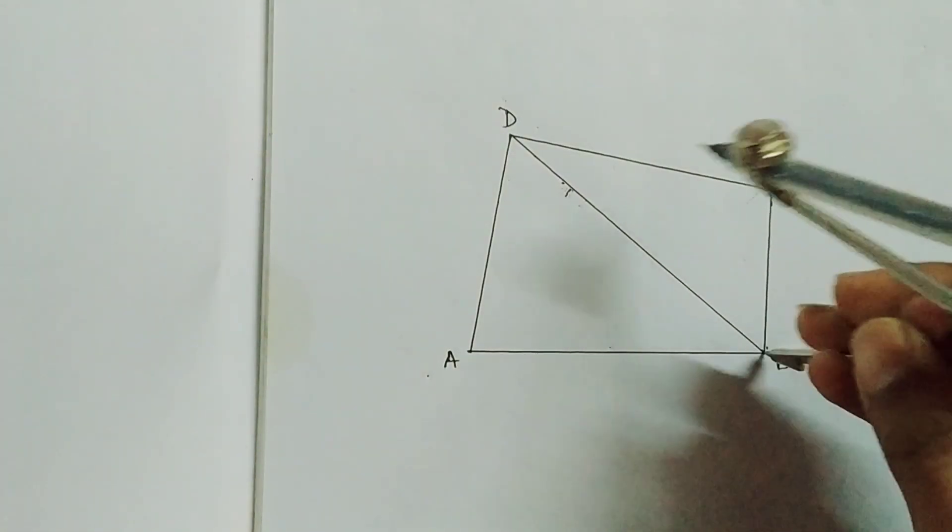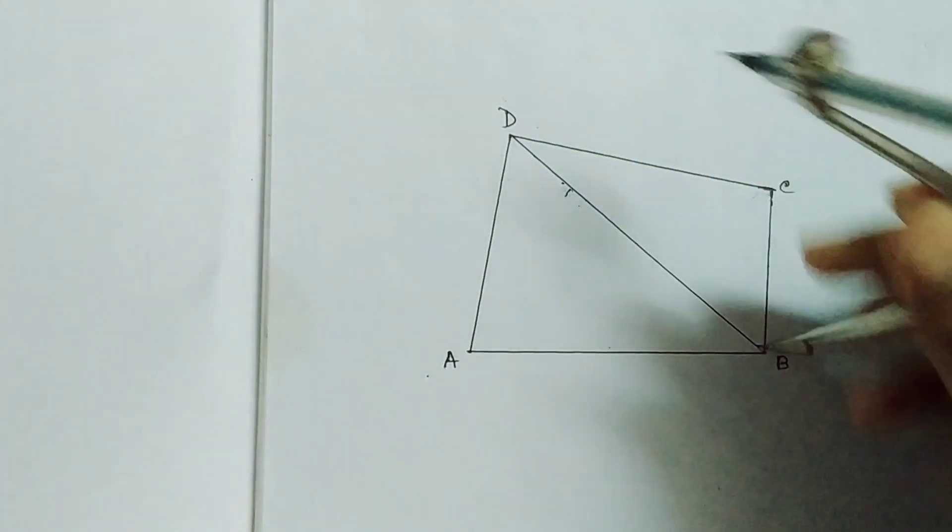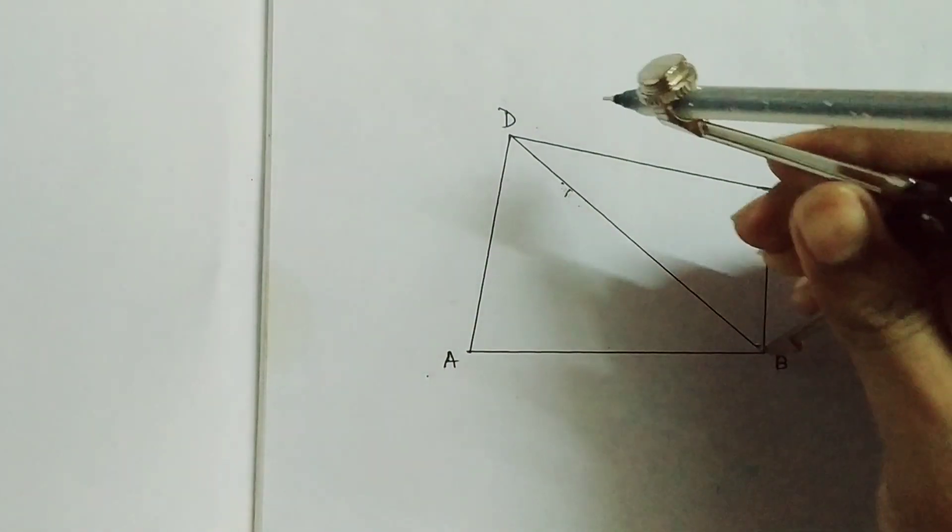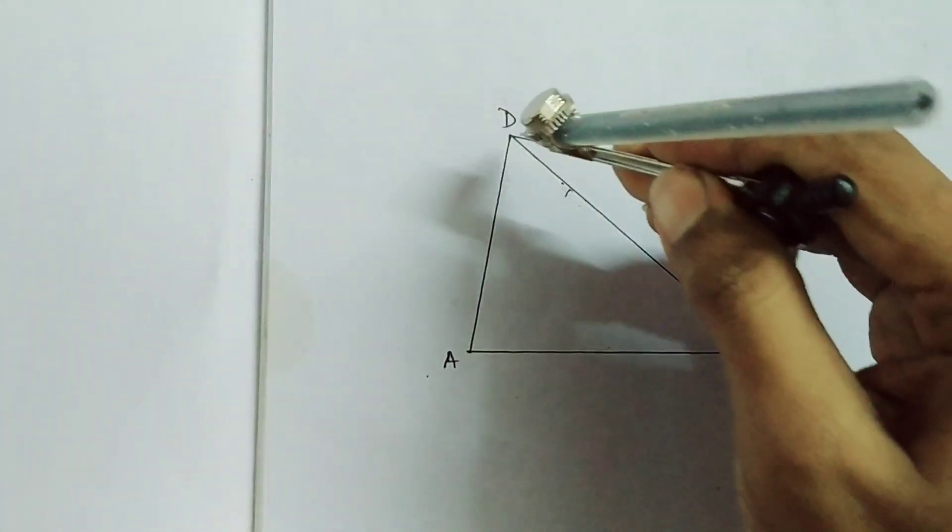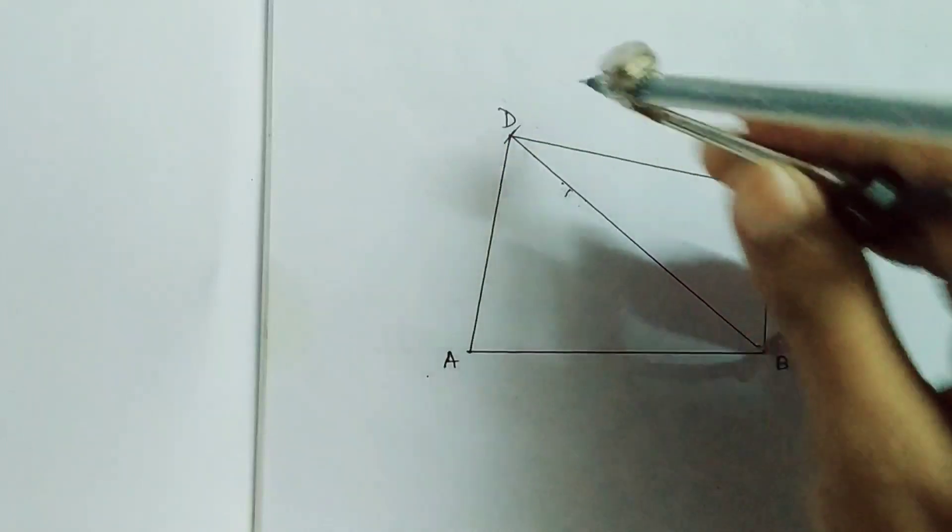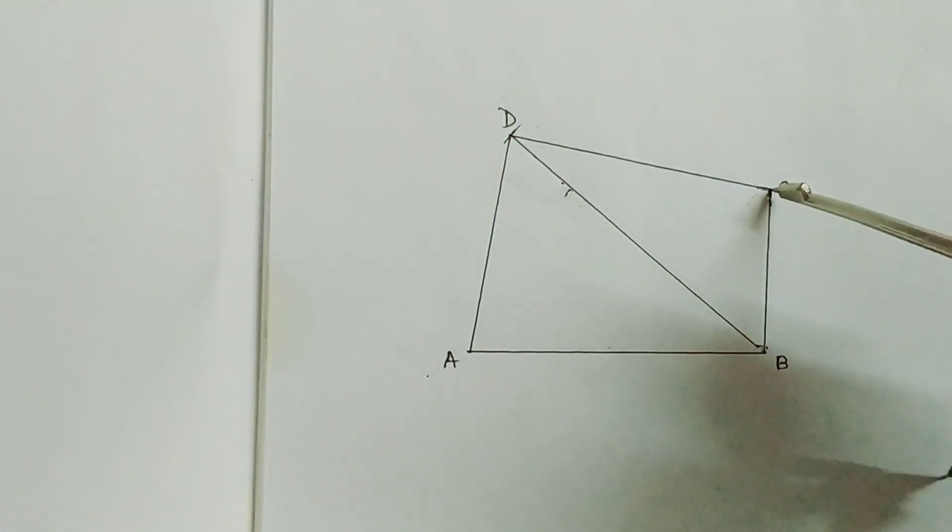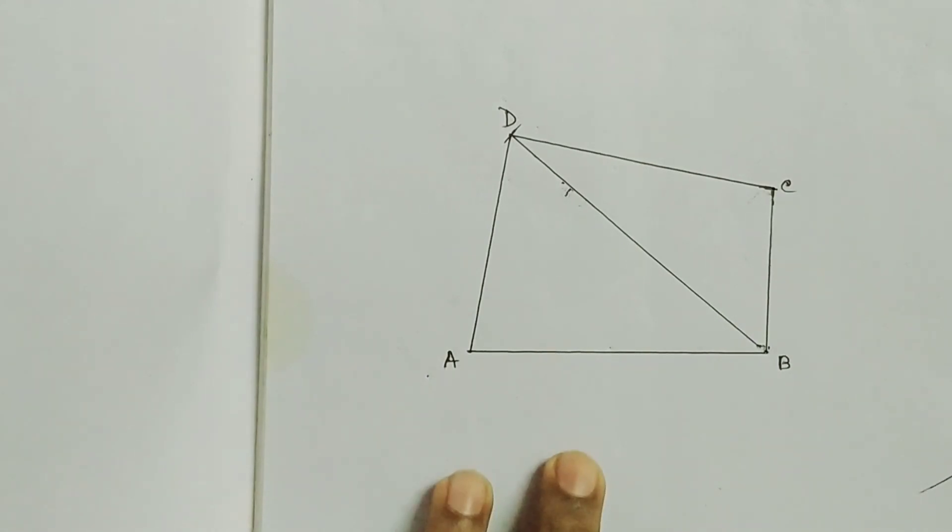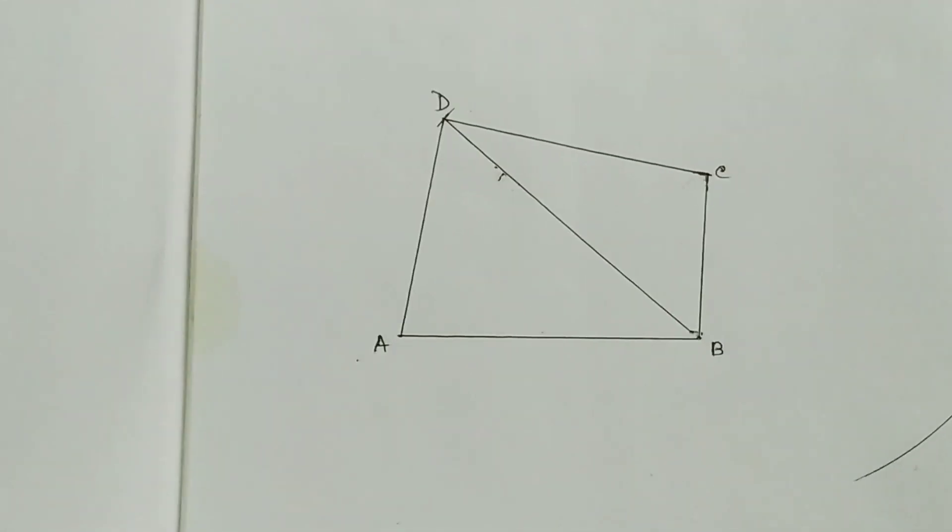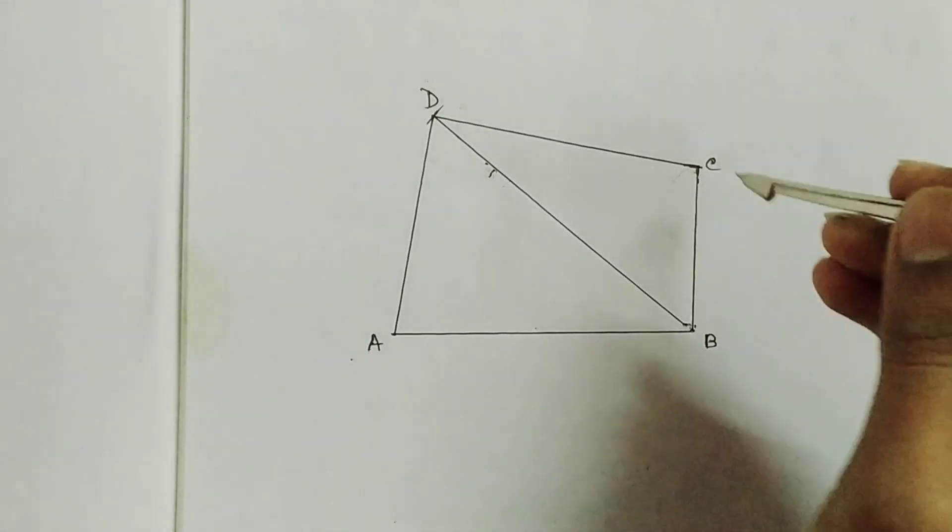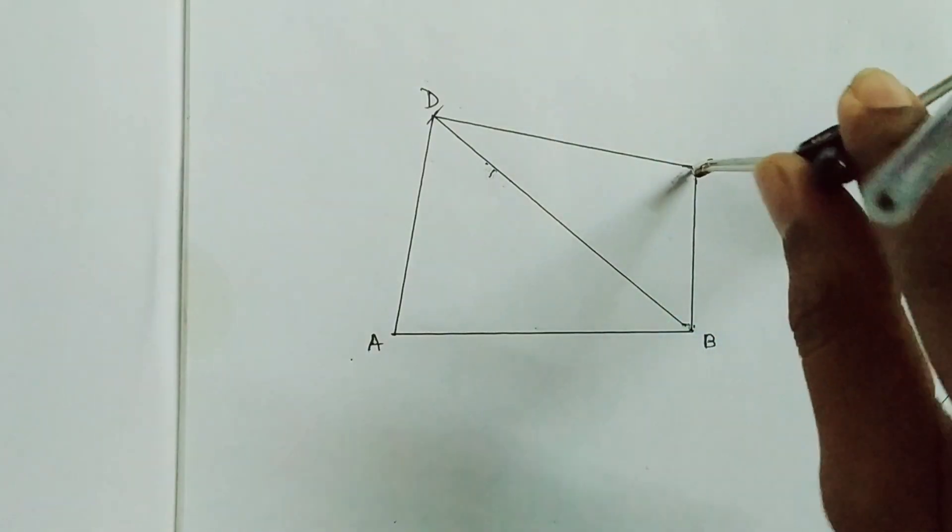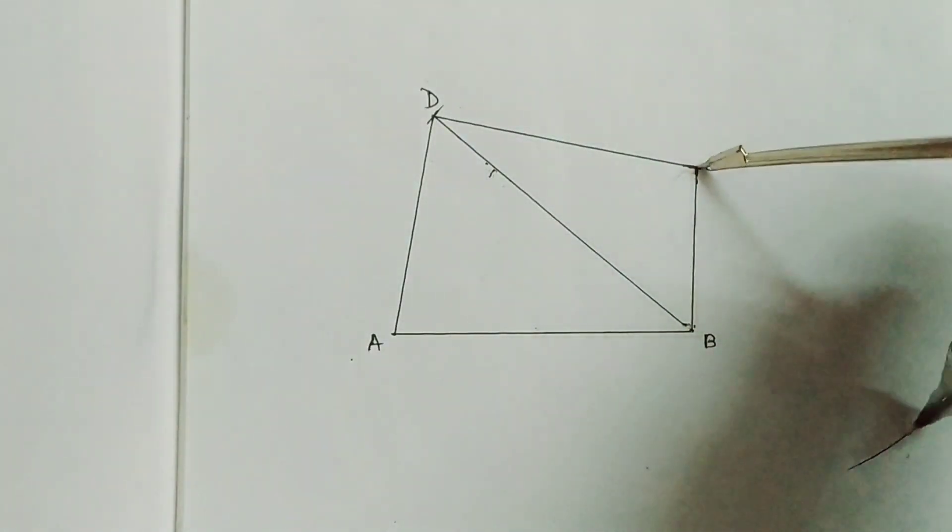To draw that, first of all we have to take the measurement from the point B to the point D. I am taking this measurement, by putting the compass at C we have to draw one arc here. By putting the compass at C I have joined this arc.